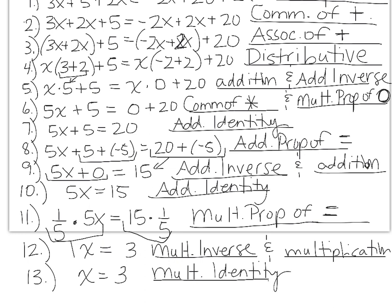Who knew that solving this equation involved 13 properties to get x equals 3? Again, you just need to know what property is happening from step to step. This is no different from what we've been doing, except we've now added four new properties: the addition property of equality, the subtraction property of equality, the multiplication property of equality, and the division property of equality. Basically, anytime you do any operation to both sides of the equal sign, that's your property of equality.